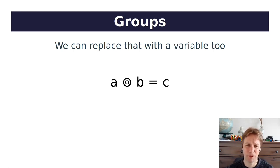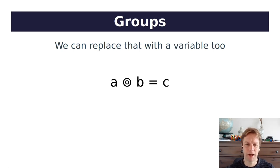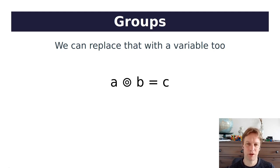The point is that dot could be anything — could be plus, could be times, could be something weird that we haven't thought about yet. But it's just a way of combining A and B to get a C. This is the core idea of a group: some operation that we don't know what it is yet.